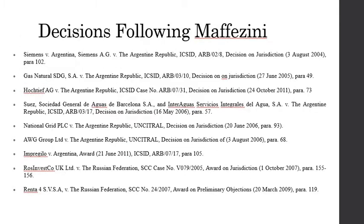Even so, several tribunals have followed the Maffesini decision. These include Siemens vs. Argentina, Gas Natural vs. Argentina, Fochtape vs. Argentina, Suez vs. Argentina, National Grid vs. Argentina, AWG Group vs. Argentina, Impregilo vs. Argentina, Ross Invest Company vs. Russia, and Rent4 vs. Russia. We see that most of these decisions are against Argentina or the Russian Federation.